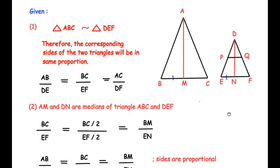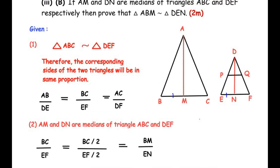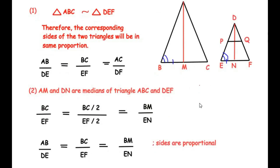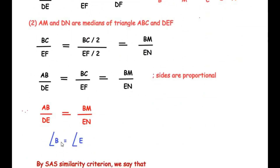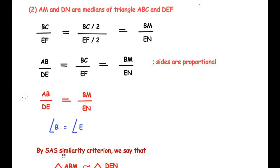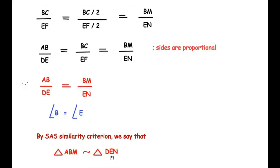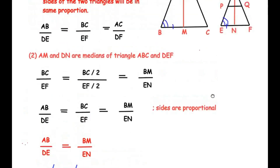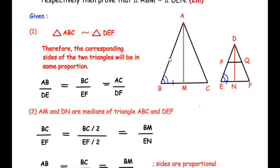Since triangles ABC and DEF are similar, angle B equals angle E. We now have AB over DE equals BM over EN, and the included angle B equals angle E. By the side-angle-side similarity criterion, triangle ABM is similar to triangle DEN — the sides AB/DE and BM/EN are proportional with the included angle between them, giving SAS similarity.